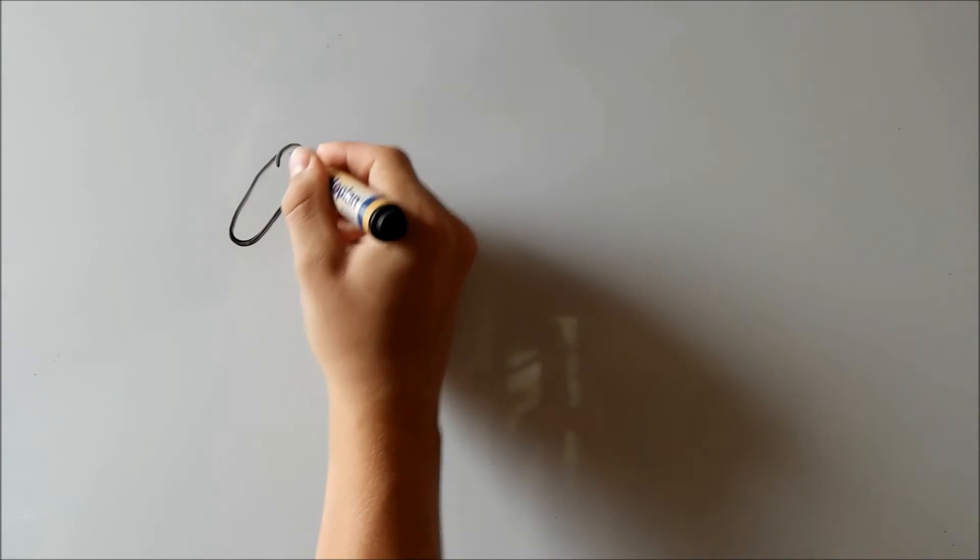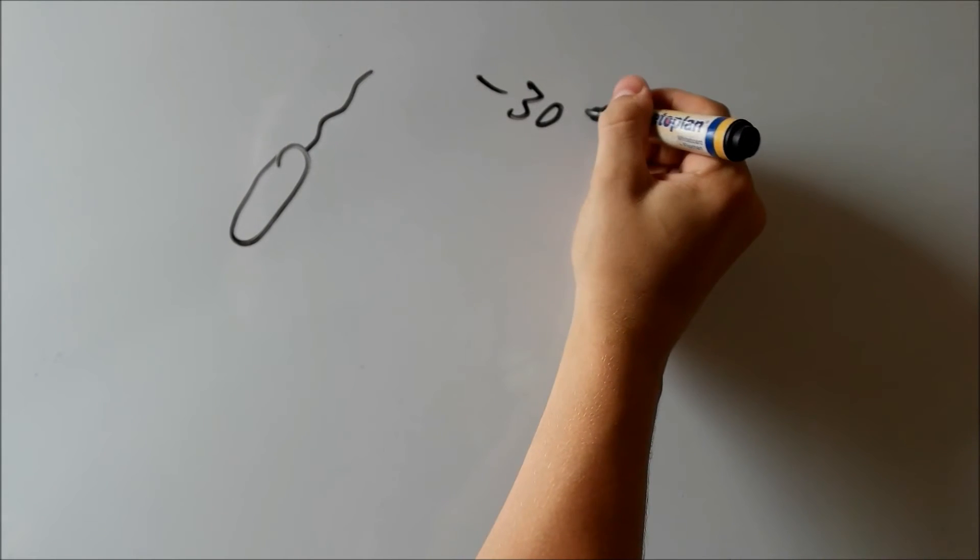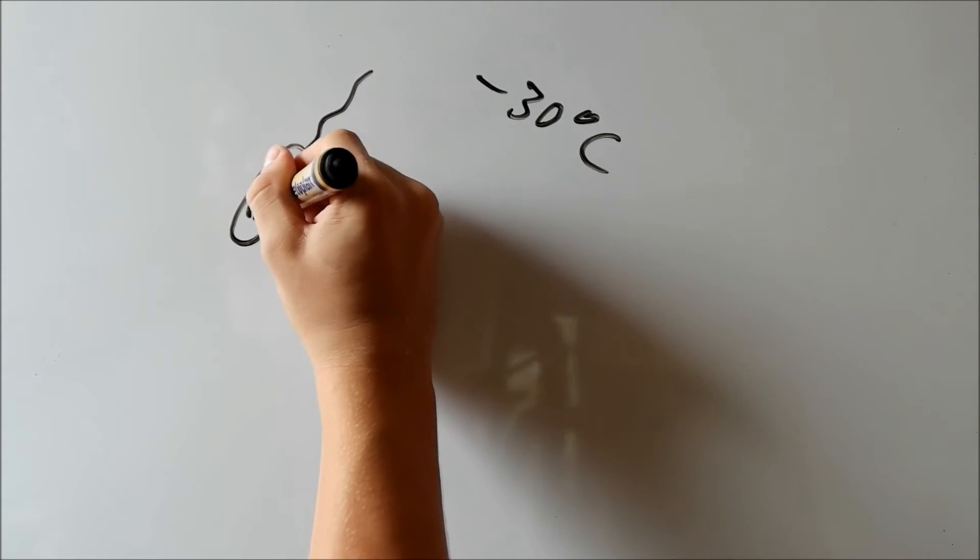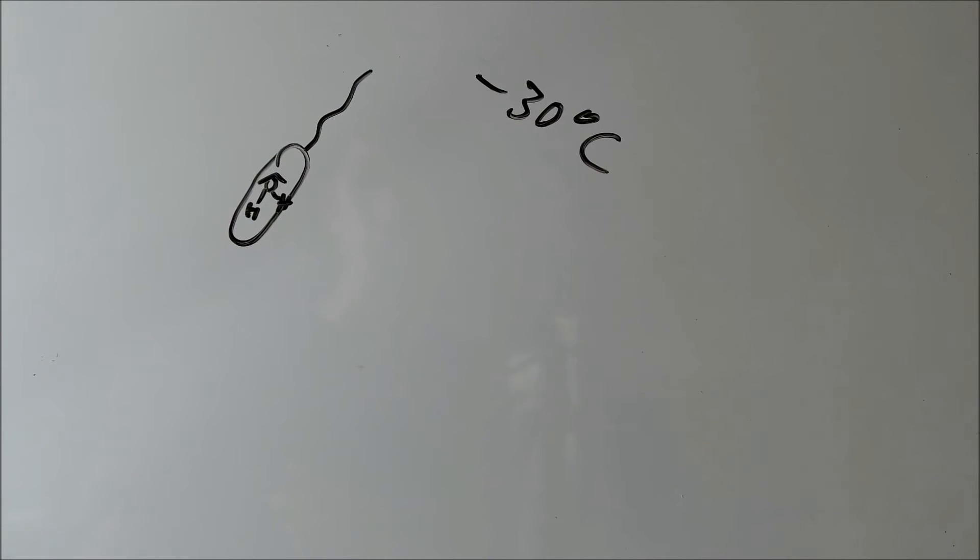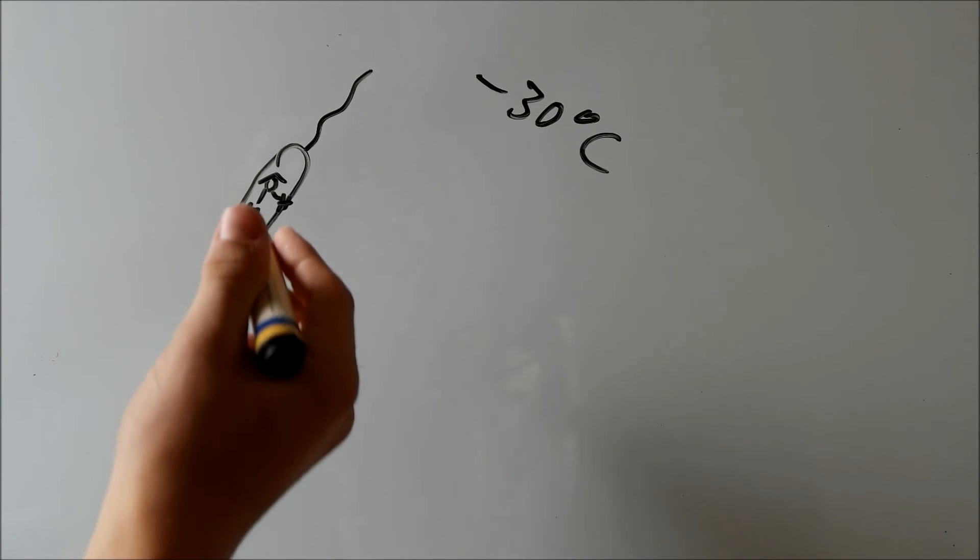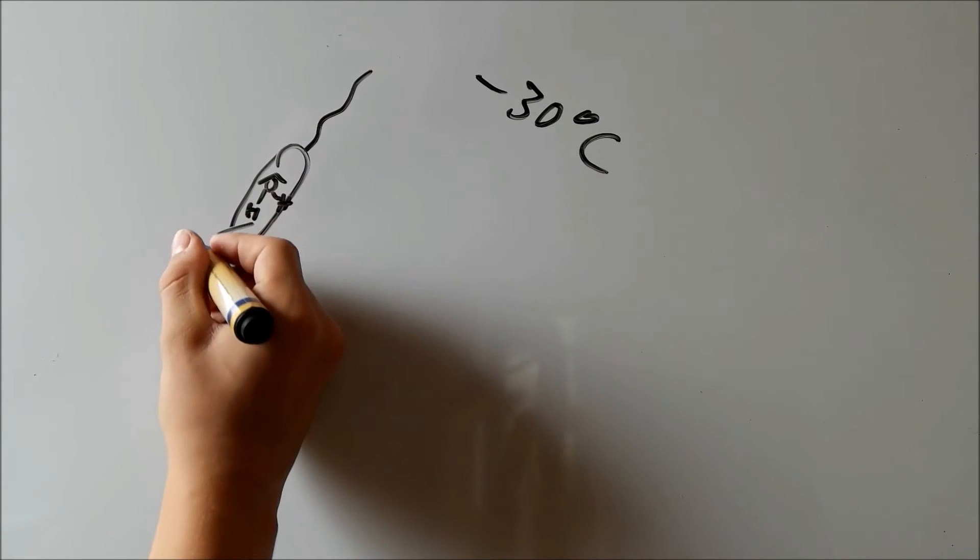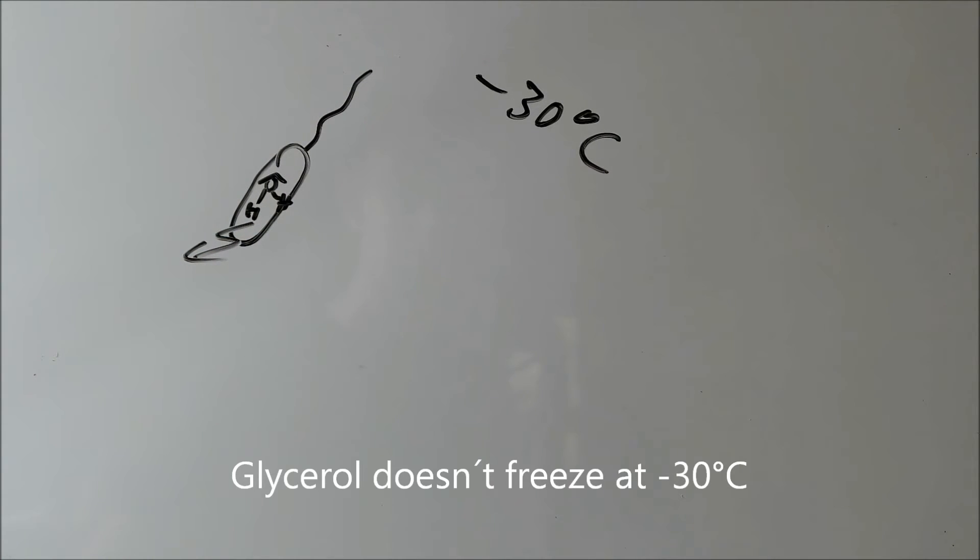Now I'm gonna explain what happens. So, we have our bacteria and if we would just put them in the freezer at minus 30 degrees Celsius, the water in the bacteria, so there's water inside here, H2O, they would die because the water would freeze and form those spiky crystals and that would destroy the cell wall of the bacteria. So, that's not good and that's why we use glycerol. And glycerol helps to prevent the effect of building water crystals.